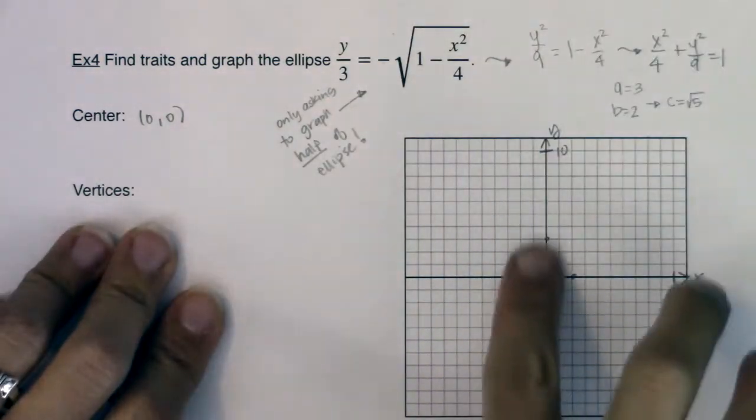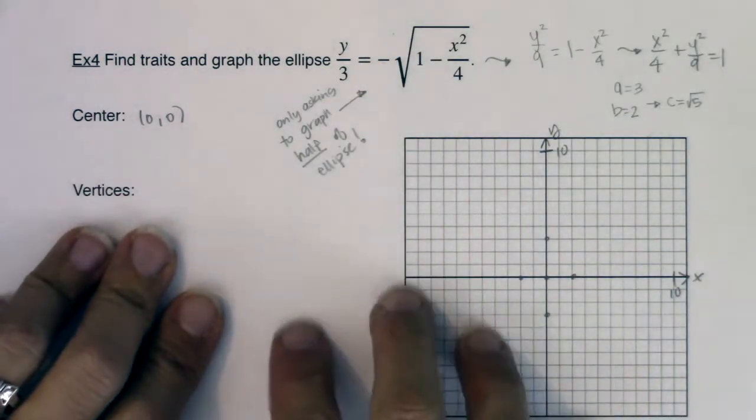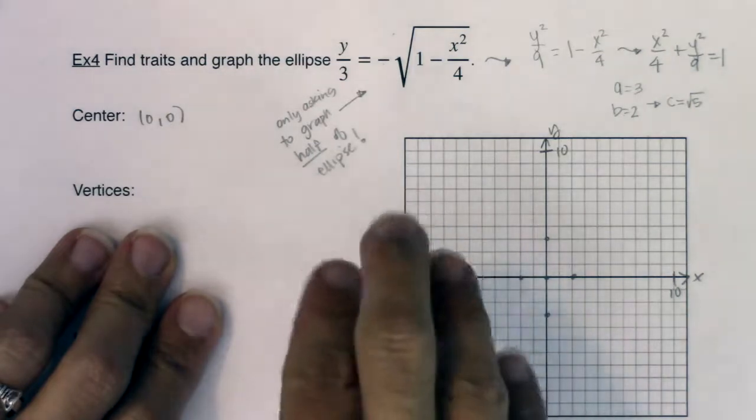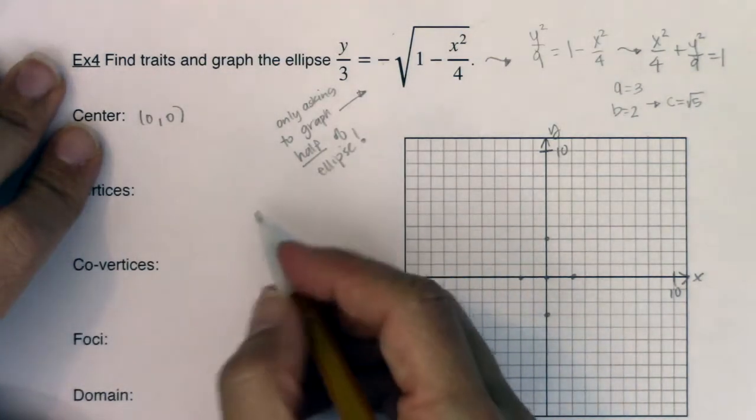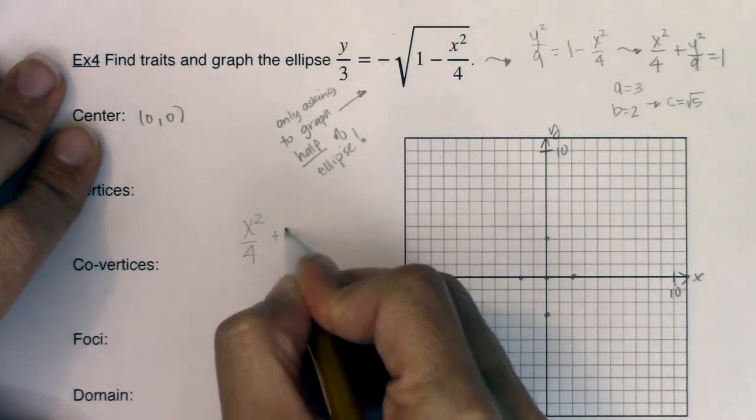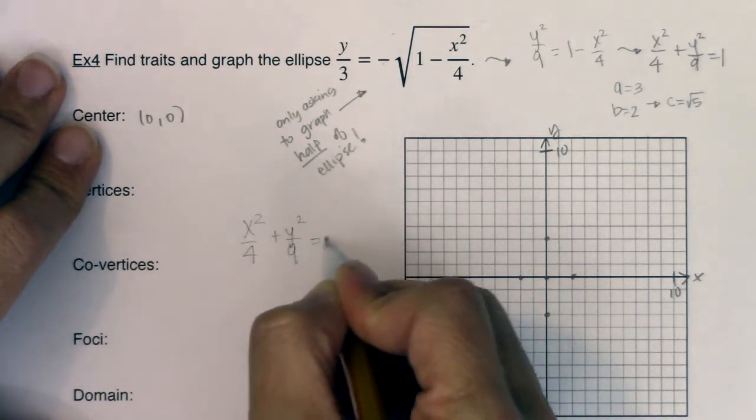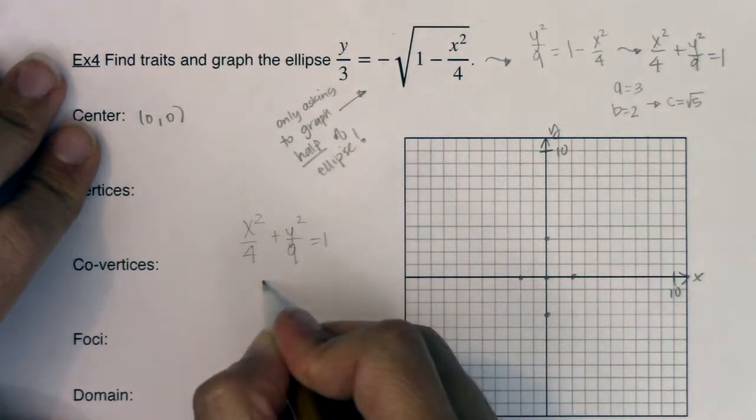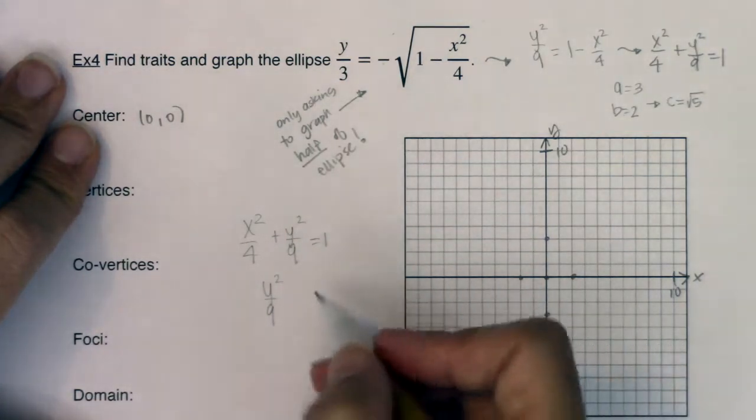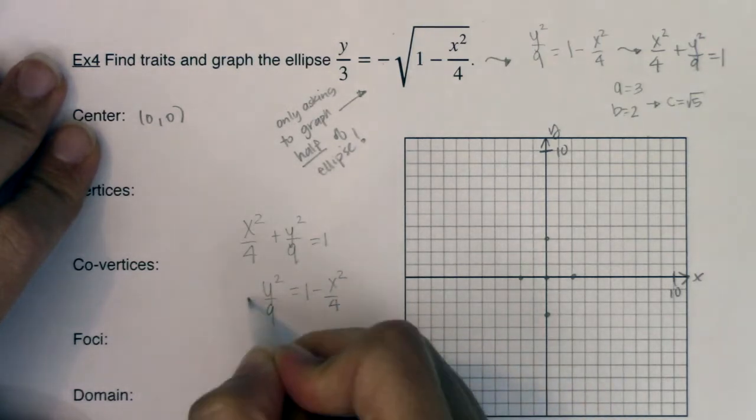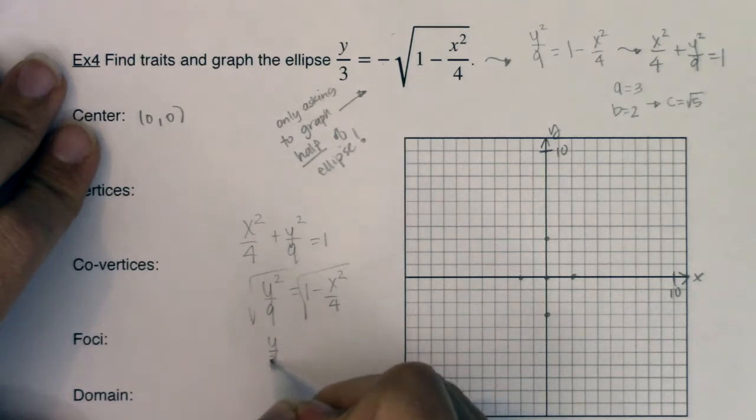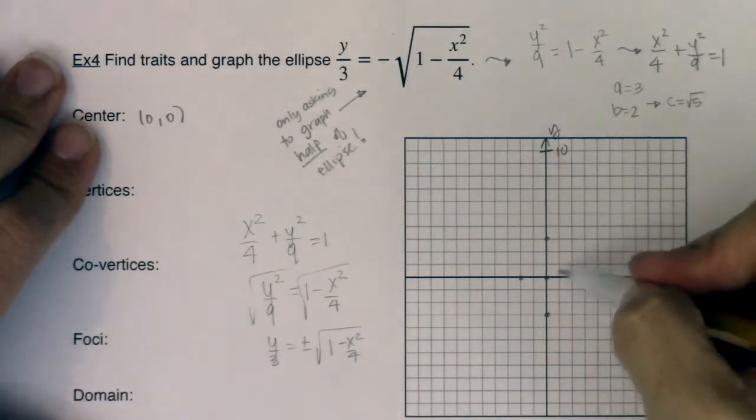Now, because this would have been a vertical ellipse, I'm specifically here asking you to graph the bottom half of the ellipse. And I'm going to reiterate why, because if we look at our original equation, if this was x squared over 4 plus y squared over 9 equaling 1, and I really did solve for y, we'll go backwards. I would have y squared over 9 is equal to 1 minus x squared over 4, and I could square root both sides. But if I square root both sides, I should have the plus or minus showing up.